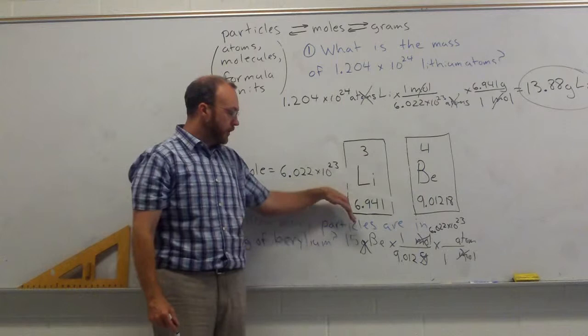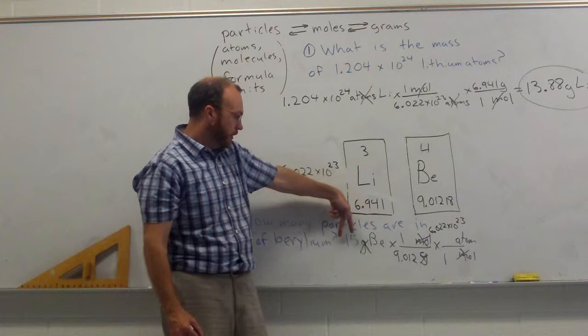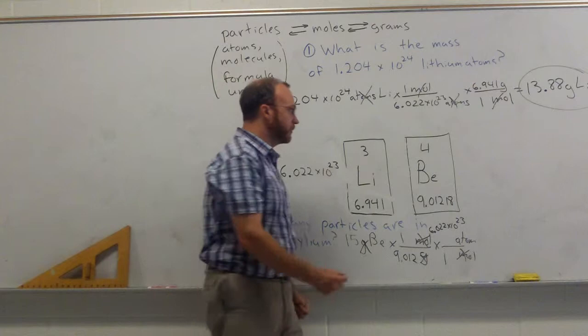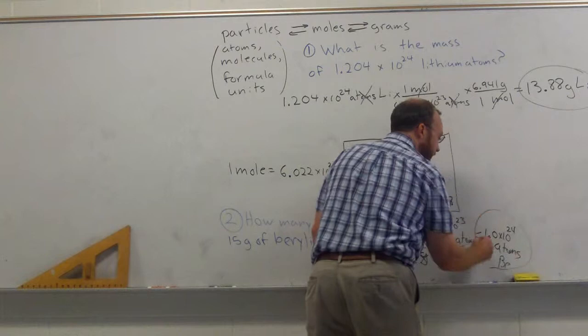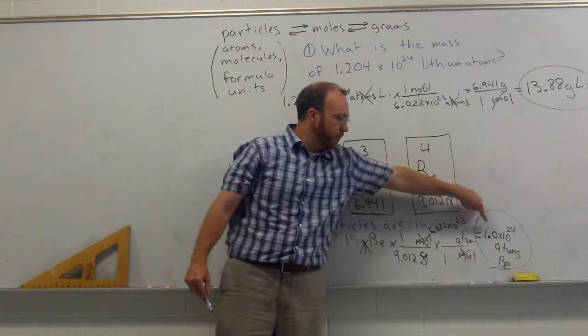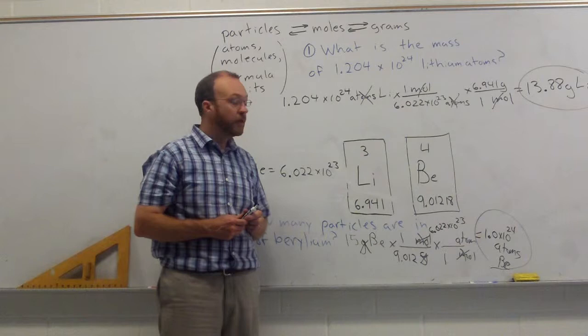So in your calculator, 15 divided by 9 times 6.022 times 10 to the 23rd. This has two significant figures. This has four. This has four. We're going to round our answer off to two. And when we do, we get 1.0 times 10 to the 24th atoms of beryllium. Now, in this case, that zero is important. It shows us that we have a second significant figure, and we have two significant figures.